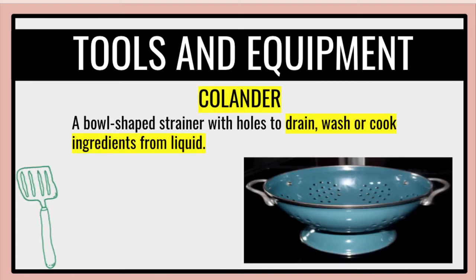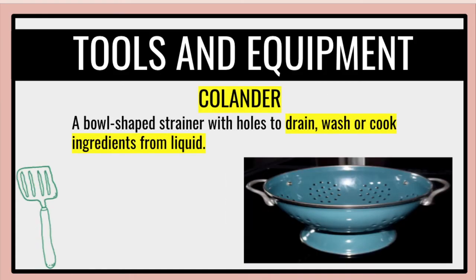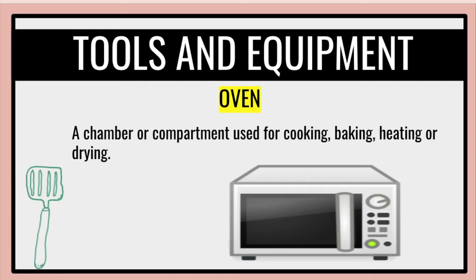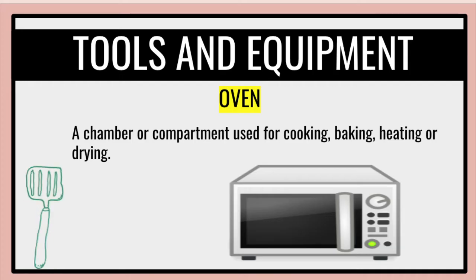A colander is a bowl-shaped container with holes used to drain, wash, or cook ingredients from liquid. An oven is a chamber or compartment used for cooking, baking, heating, or drying.